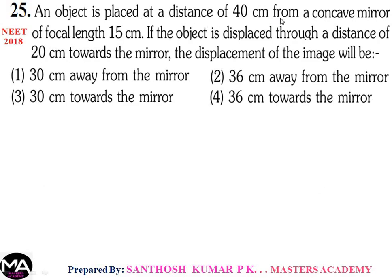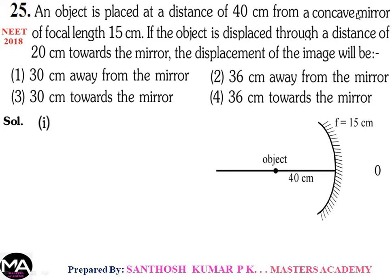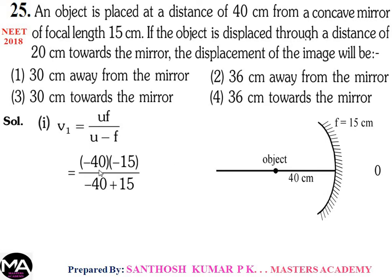Question 25: An object is placed 40 cm from a concave mirror of focal length 15 cm. If displaced to 20 cm towards the mirror, find the displacement of the image. Case 1: u = −40, f = −15. Using mirror formula: v1 = uf/(u − f) = (−40)(−15)/(−40 + 15) = 600/(−25) = −24 cm. Case 2: u = −20, f = −15. v2 = (−20)(−15)/(−20 + 15) = 300/(−5) = −60 cm.